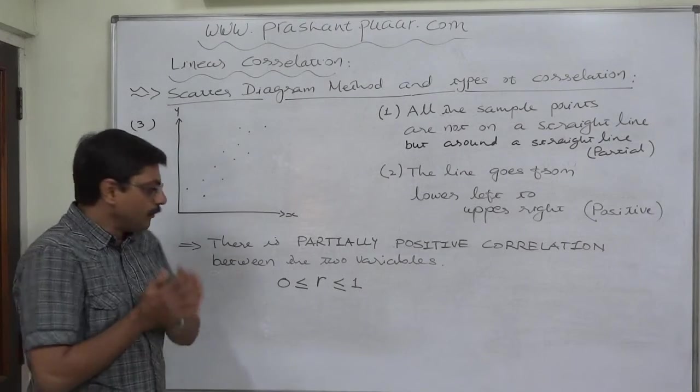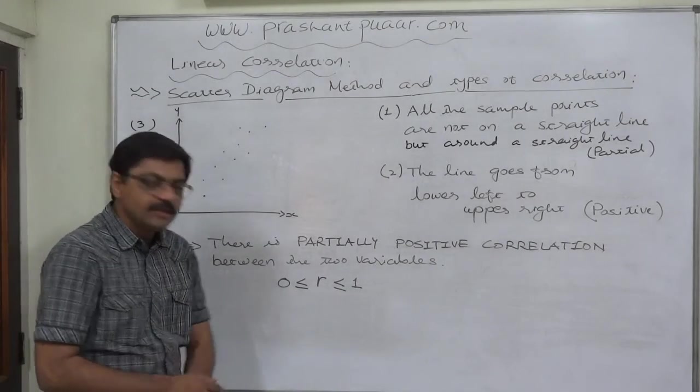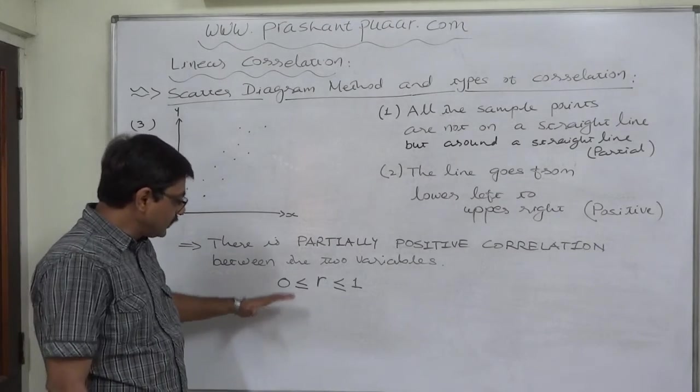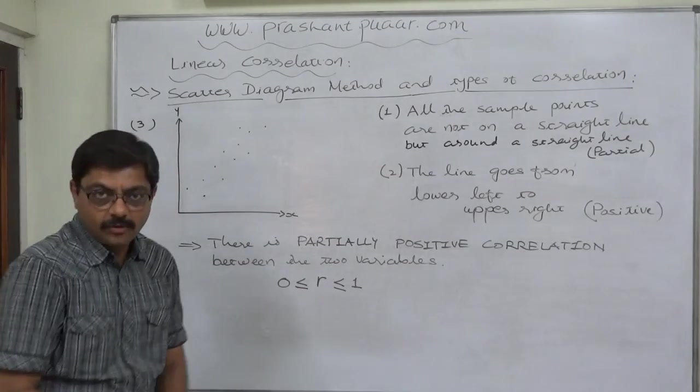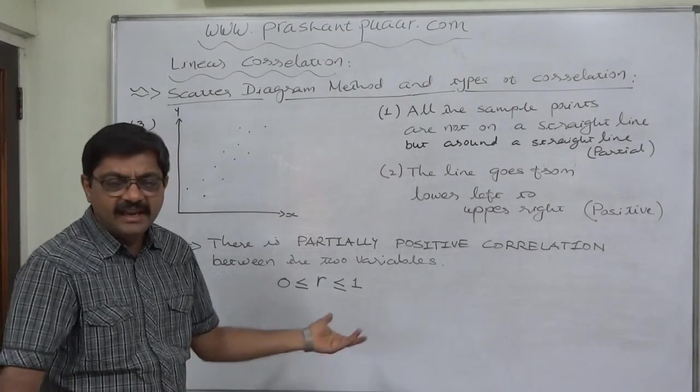That's why there is positivity. But if we calculate the coefficient of correlation, we get a value between 0 and 1—or we can say it is greater than 0 but can never be greater than 1.